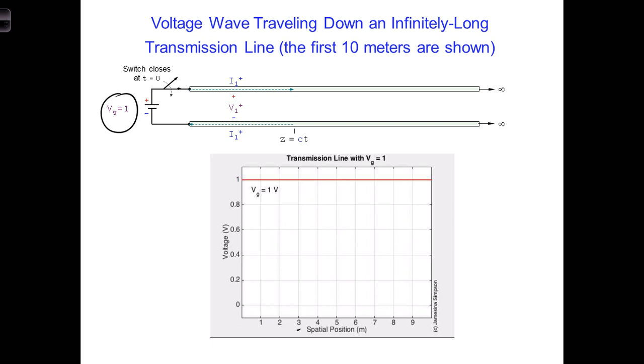Quick question. How fast does the voltage wave travel down the transmission line if the insulating material is changed from air to Teflon, so the material between the two conductors is changed to Teflon, with an epsilon r relative permittivity of 2.1?